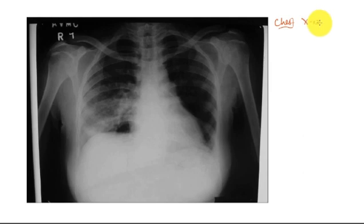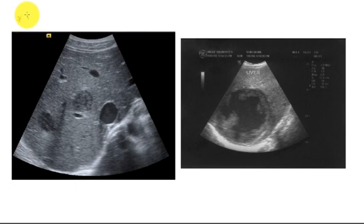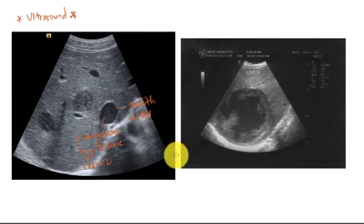This is an x-ray picture of amoebic abscess. You can see here the elevated right dome of the diaphragm and haziness on the lower lung field denoting pleural effusion. Here we have ultrasound picture of amoebic abscess. It shows a homogeneous hypoechoic lesion with a smooth wall. This is characteristic for amoebic abscess.